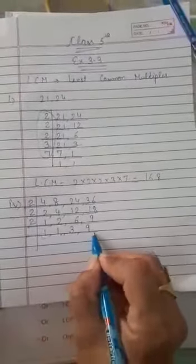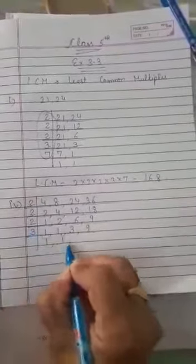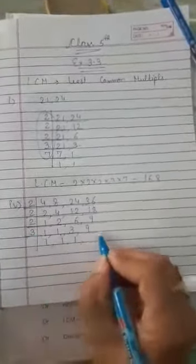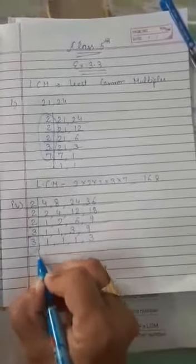3 and 9 both are not visible in 2 table. Next, 3 table. 1, 1. 3, 1's are 3. Then 3, 3's are 9. Only there left. Now, 3 is divisible in 3 table. 1, 1, 1 and 1. Now, LCM is 2 multiply by 2 multiply by 2 multiply by 3 multiply by 3.